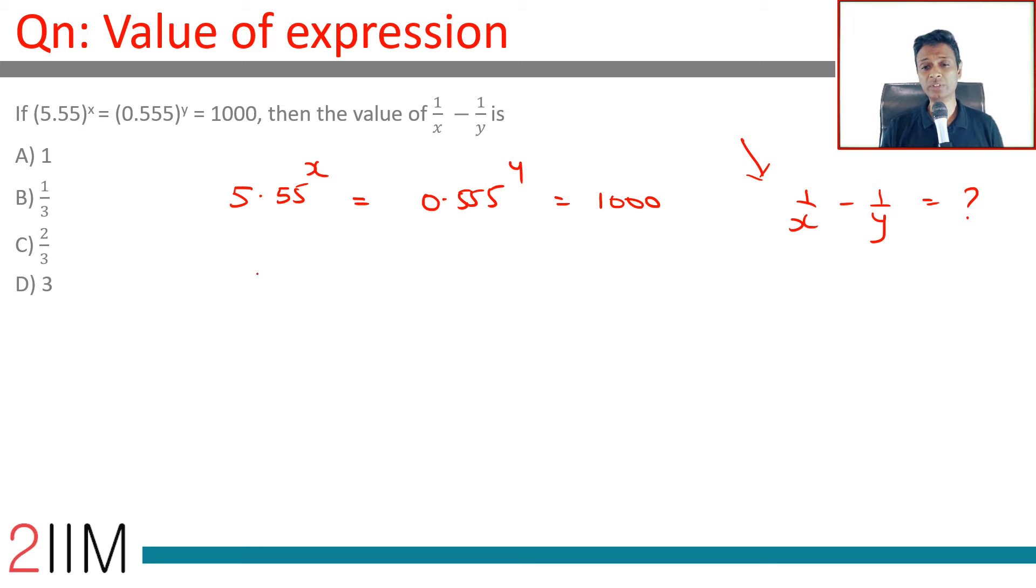How do I simplify? 5.55 is 1000 to the power 1 by x. 0.555 is 1000 to the power 1 by y.